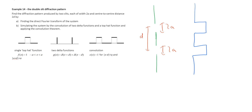We can work out the diffraction pattern — all we have to do is take the Fourier transform of the function f(x) that defines the transmission function of the slits, and then the diffraction pattern will be proportional to the square of the Fourier transform. Taking the origin as the center point between the two slits, we can see that we have an even function.